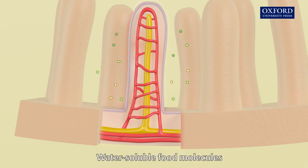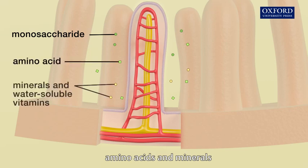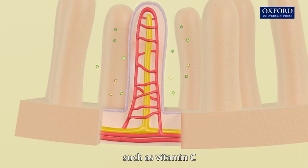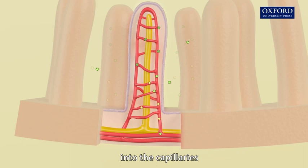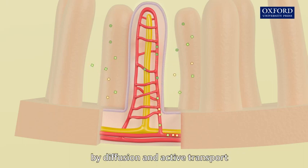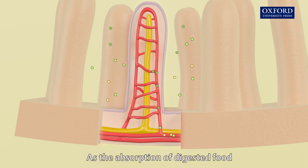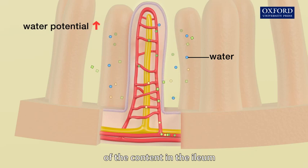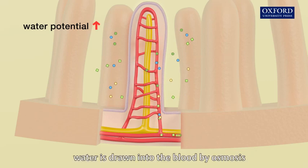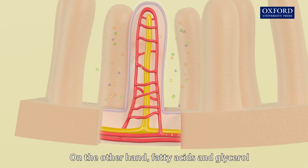Water-soluble food molecules such as monosaccharides, amino acids and minerals, as well as water-soluble vitamins such as vitamin C, are absorbed through the walls of the villi into the capillaries by diffusion and active transport. As the absorption of digested food into the blood increases the water potential of the content in the ileum, water is drawn into the blood by osmosis.